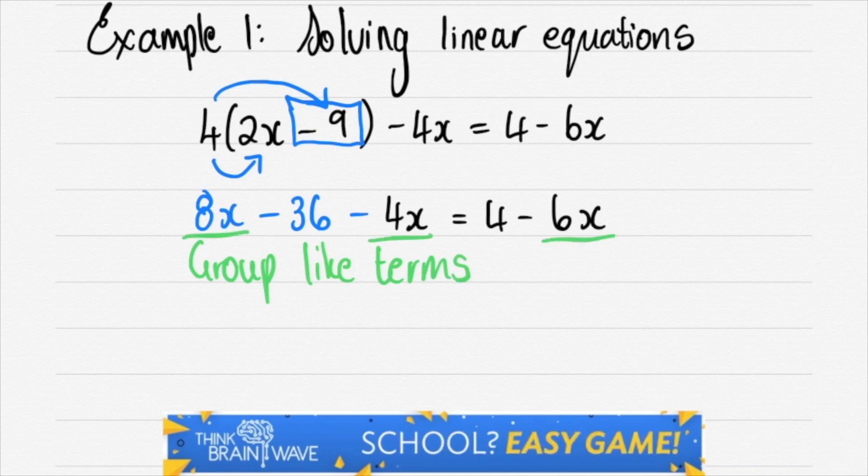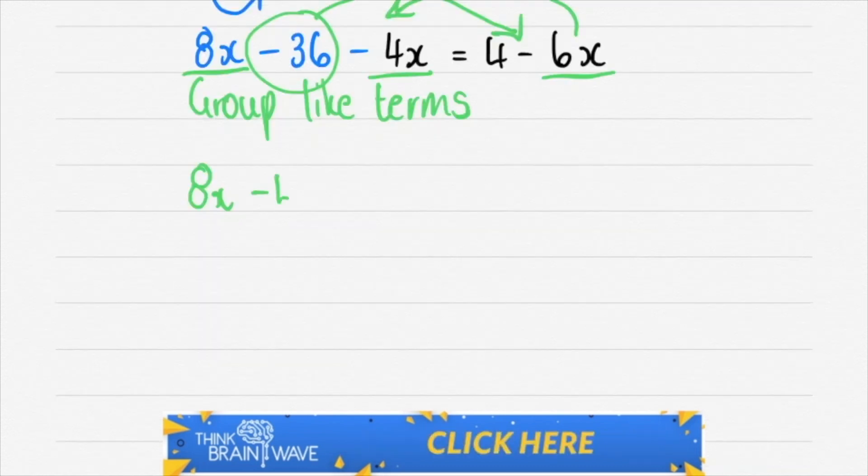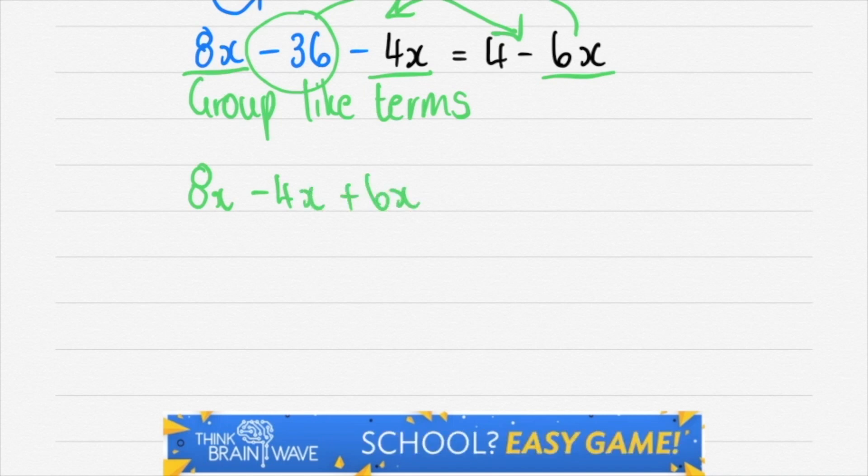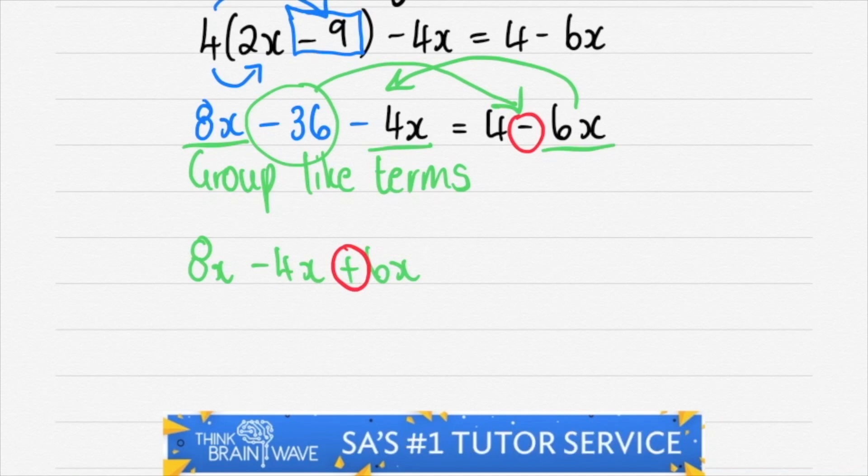We then group our like terms, all the x's go to the one side. So we take this 6x to the one side. So we will also take 36 across but remember the signs change. When you jump across an equal sign your sign changes. That is why we have got the red circle around the plus and the minus.